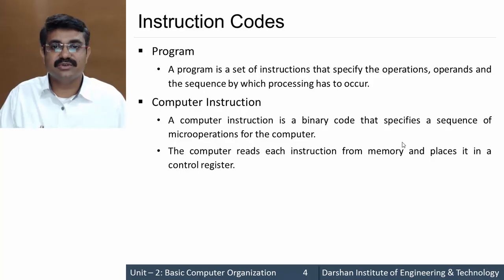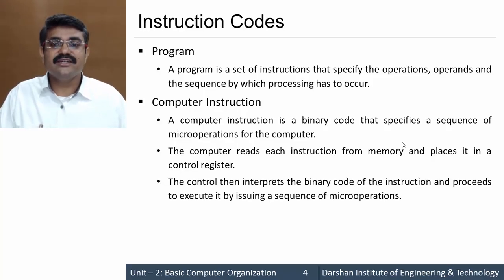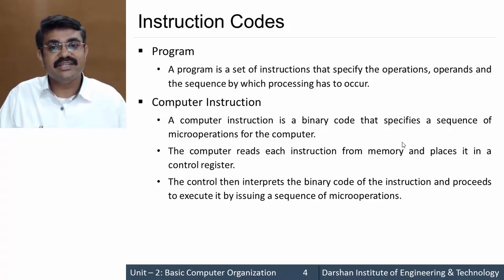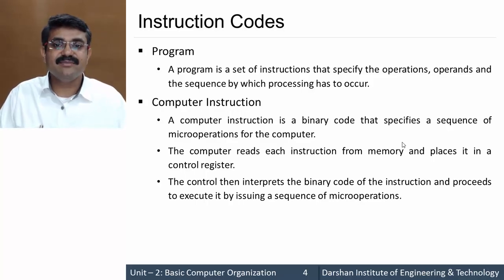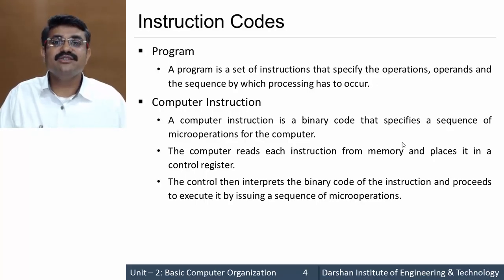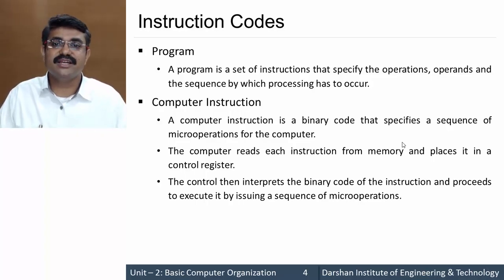Such micro operations are defined based on a binary code, and that is the instruction. Computer instructions are read from memory, transferred to the control register, which then interprets this binary code and proceeds to execute by issuing the sequence of micro operations. The binary code is decoded and based on that, the corresponding micro operations are carried out.